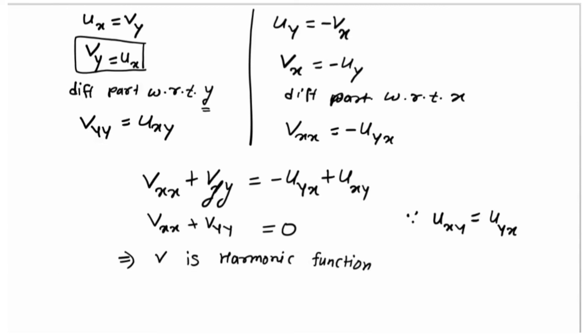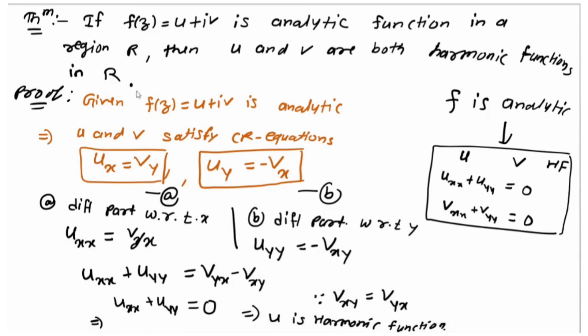Since both u and v are harmonic, this proves the theorem: if f(z) = u + iv is analytic, then both u and v are harmonic functions — the harmonic condition holds for both.